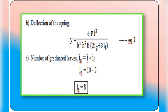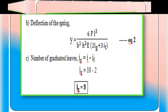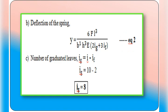Since there are two unknowns in equation one, we need one more equation. The number of graduated leaves, i suffix g = total leaves minus full-length leaves = i minus i_f = 10 minus 2 = 8. So i suffix g is equal to 8 and i suffix f is equal to 2.